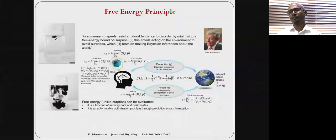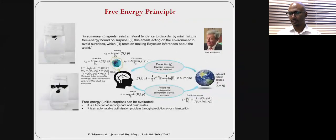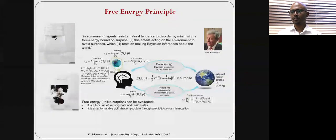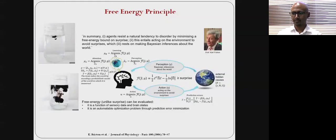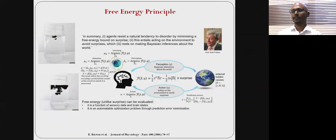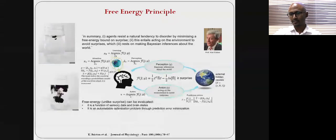I'll introduce you to a slightly complicated principle that underlies most cognitive function, made famous by Professor Karl Friston, who has been called the father of modern neuroscience. Let's start from the beginning. Imagine something has to exist not just at a point in time, but over time. This brings us to the second law of thermodynamics, which states that with time, disorder in the world keeps increasing endlessly.